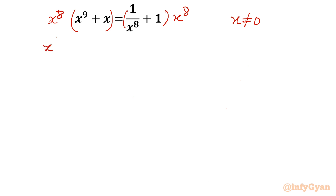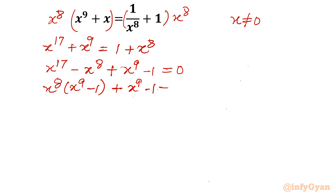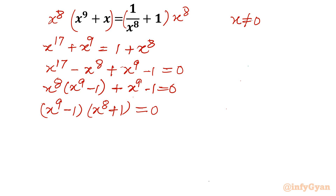Multiplying gives x^17 + x^9 = 1 + x^8. Taking all terms to the LHS: x^17 - x^8 + x^9 - 1. We can take x^8 common from the first two terms: x^8(x^9 - 1) + (x^9 - 1) = 0. So we conclude (x^9 - 1)(x^8 + 1) = 0.